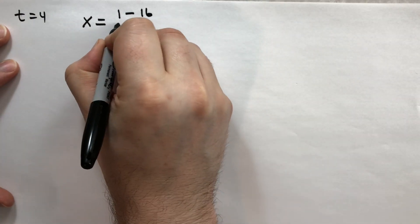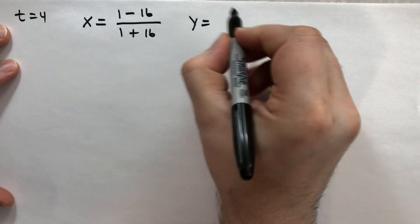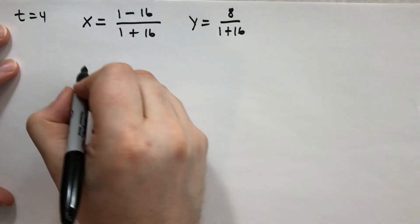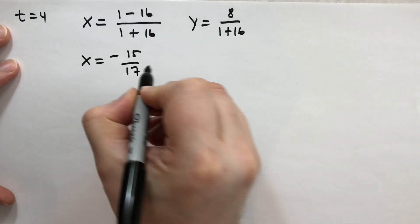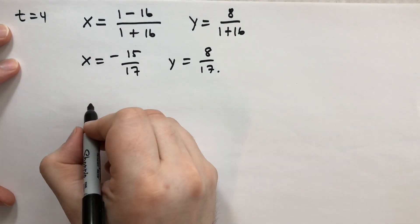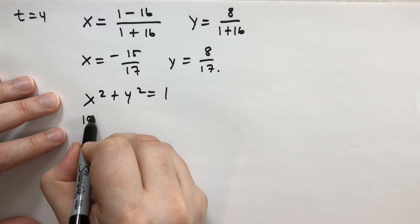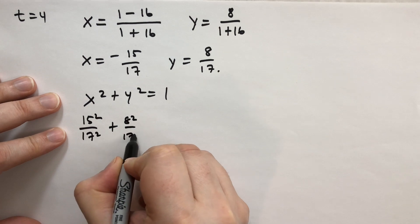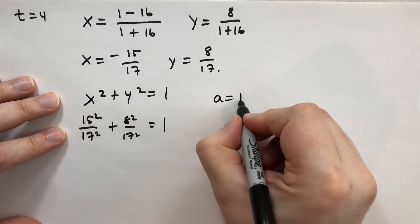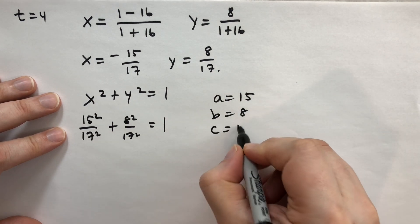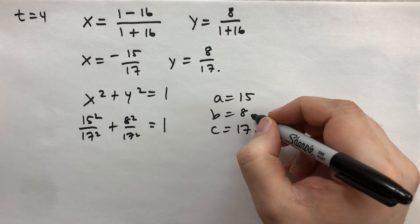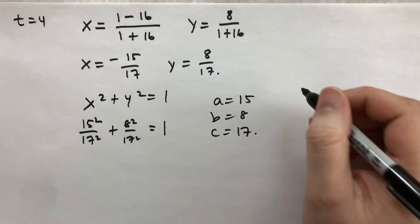Let's try t = 4. We get x = (1 − 16)/(1 + 16) = −15/17, and y = 8/17. So x² + y² = 15²/17² + 8²/17² = 1. Therefore a = 15, b = 8, and c = 17. 15² = 225, 8² = 64, and 17² is the sum of those. You can verify with a calculator.